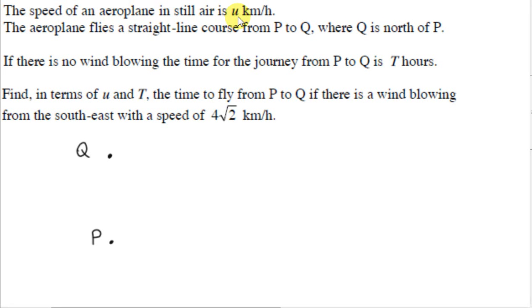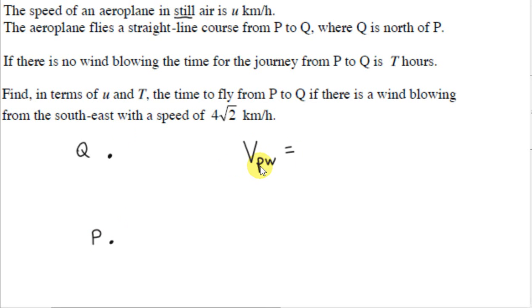The speed of an aeroplane in still air is U kilometres per hour. As explained in the last video about a boat on a river, the speed of an object relative to a still medium — whether air or water — gives us the speed relative to that medium. So the velocity of the plane relative to the wind, written V_PW, is given by this value. It's not V_P; it's V_PW, which in this case is some unknown value U.